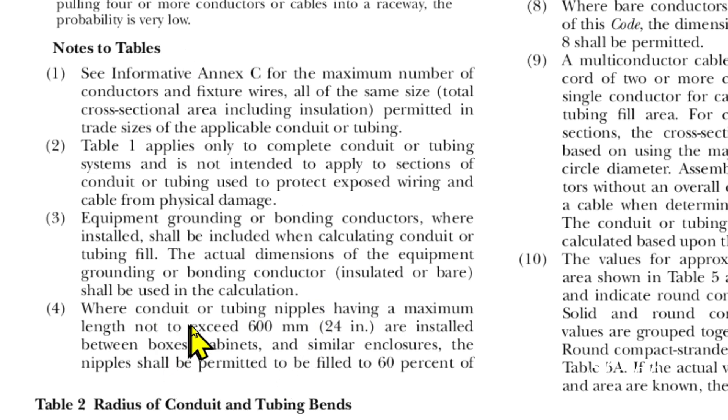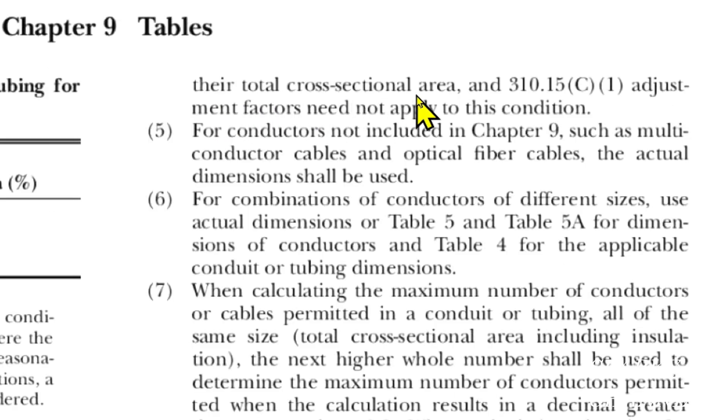We'll go to Notes to Tables, Number 4. It says where conduit or tubing nipples having a maximum length not to exceed 600 millimeters (24 inches) are installed between boxes, cabinets, and similar enclosures, the nipples shall be permitted to be filled to 60% of their total cross-sectional area, and 310.15C1 adjustment factors need not apply to this condition.